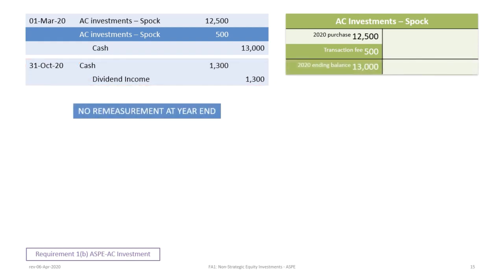Here's where it starts to get a little different. Between now and year-end December 31st, normally under all other methods we would record a fair value remeasurement. But under amortized cost investments, we don't do that — no remeasurement at year-end. So the balance in the account at the end of the year is just $13,000, which is the original cost.